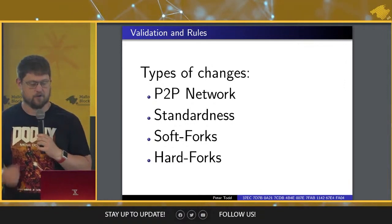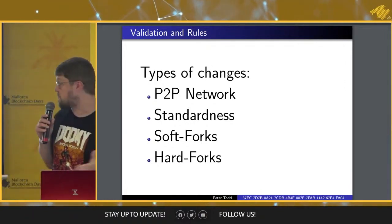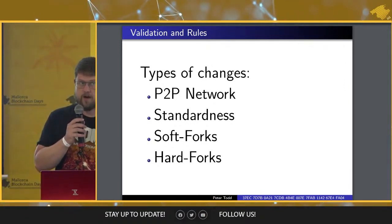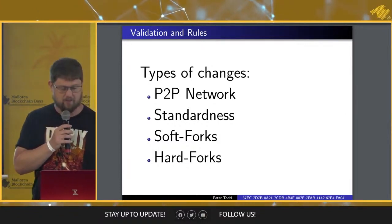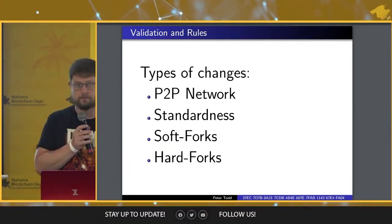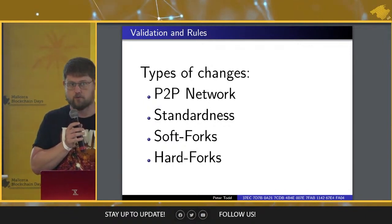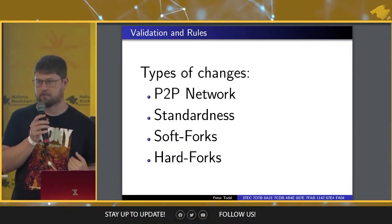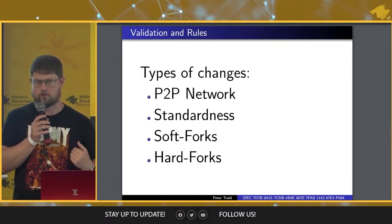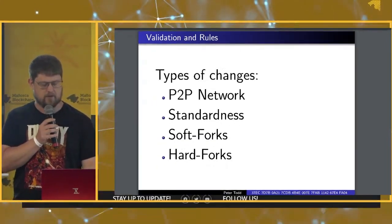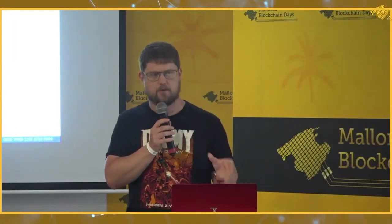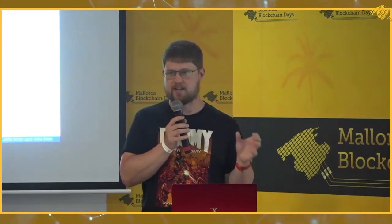We've basically figured out how nearly any type of transaction can be passed around these days if you're using things like Taproot. But the bigger question is: what are the rules that consider a block to be valid? This comes down to soft forks and hard forks. A soft fork means we are making the rules tighter. A hard fork means we are loosening the rules. This is about deciding what is actually a valid block — what data is allowed to be committed as a confirmed transaction.